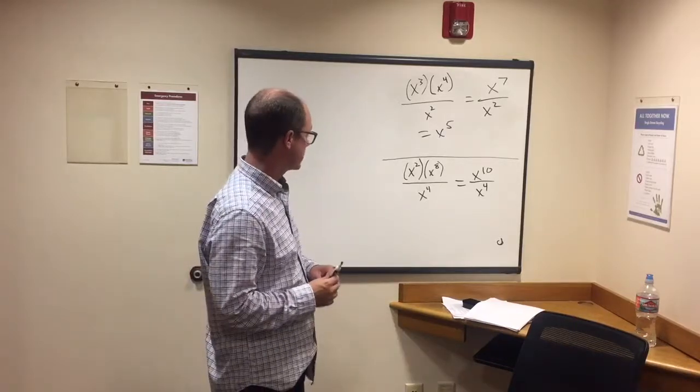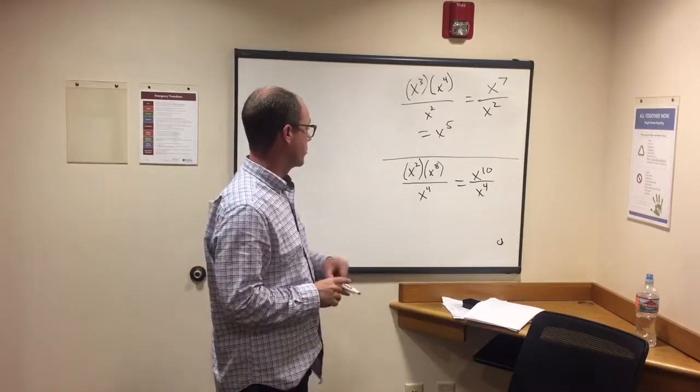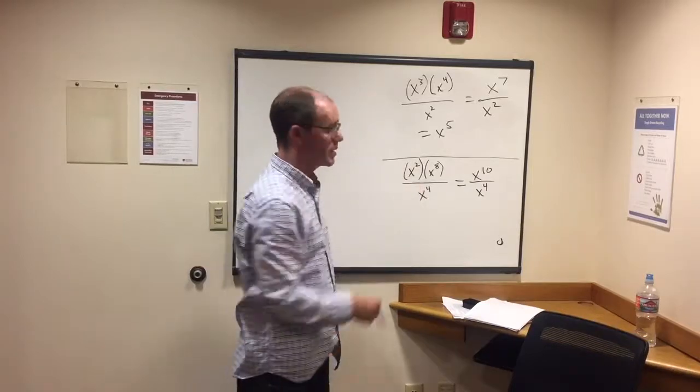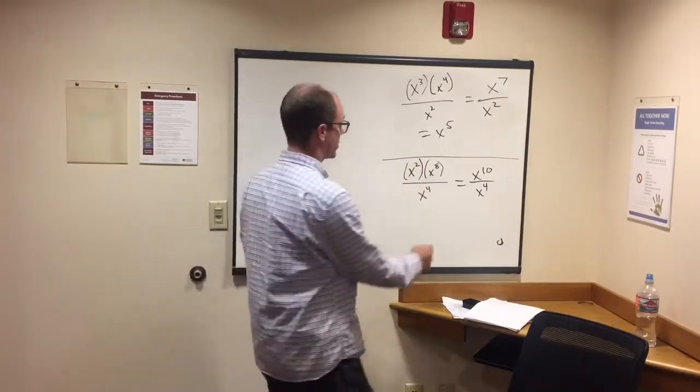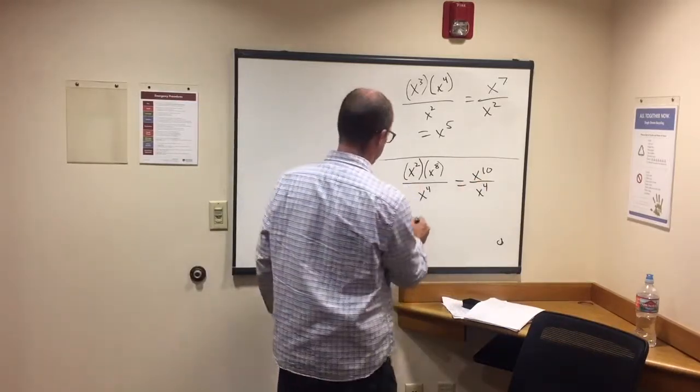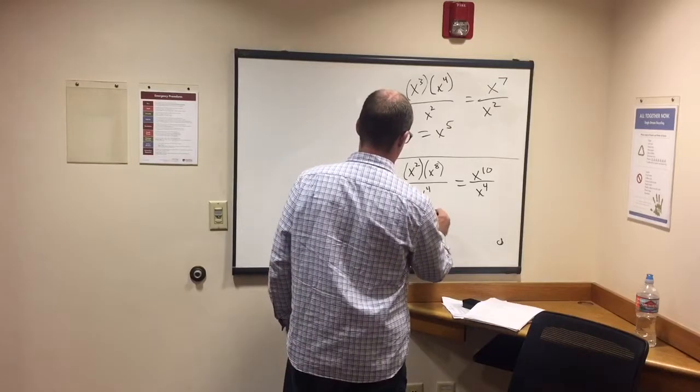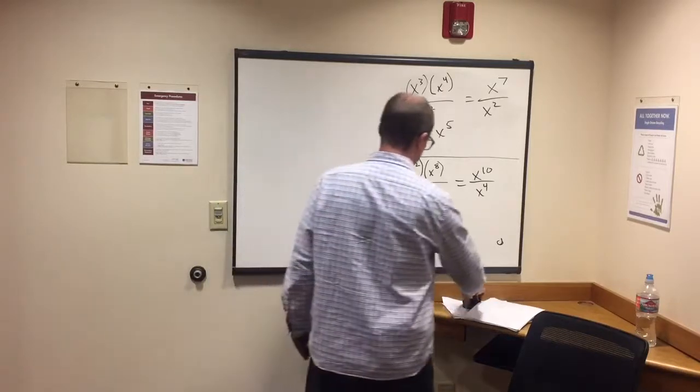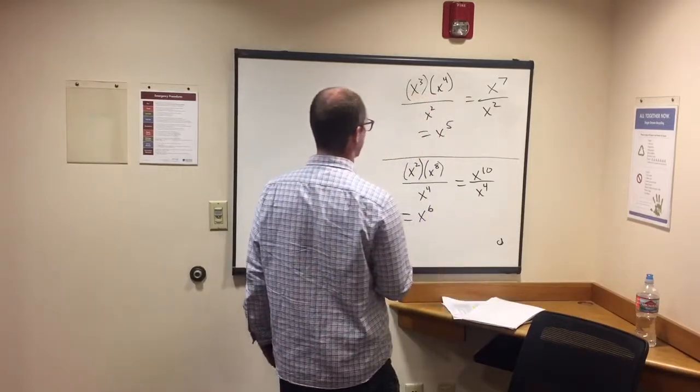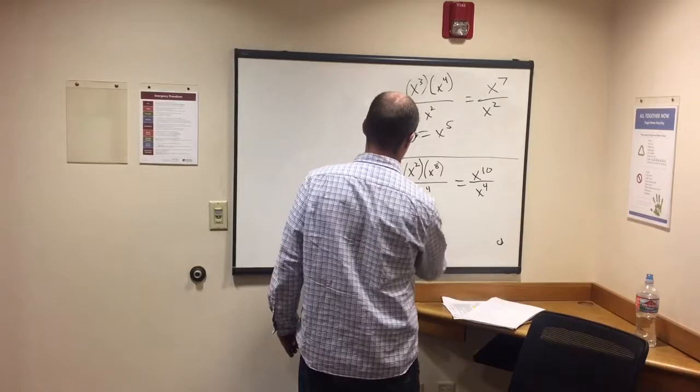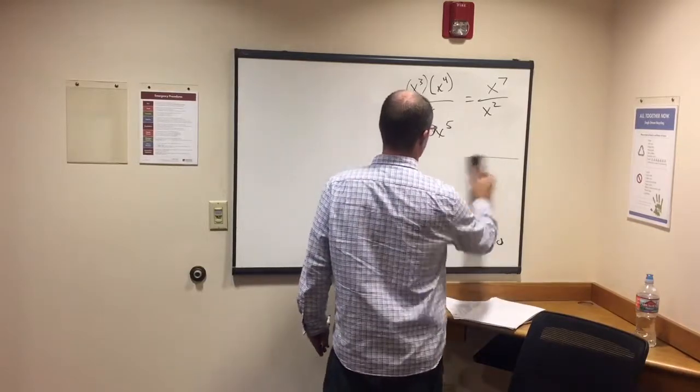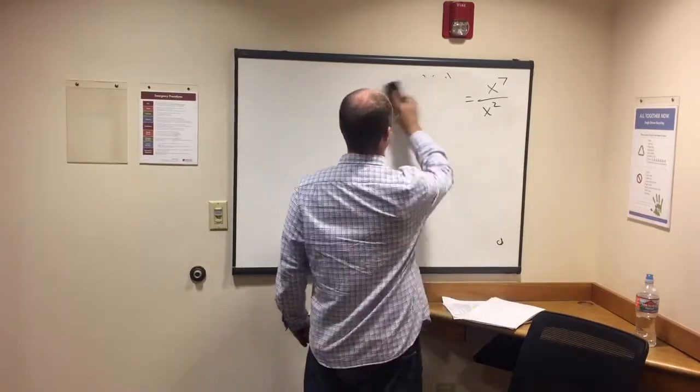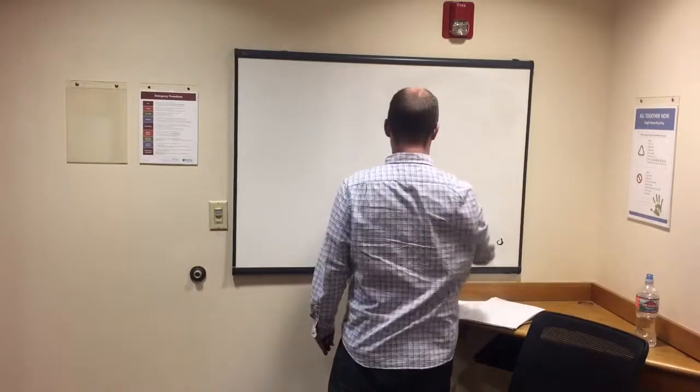So we added the exponents when we were multiplying, and then when we're dividing, we're going to subtract. We're going to subtract ten minus four, that's six. That's our answer, x to the sixth. There's a little look at both multiplying and dividing exponents with the same base. You're not going to see anything that doesn't have the same base, so don't even concern yourself with that.